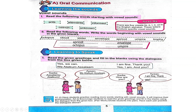Do you know how many vowels there are? There are 5 vowels and they are A, E, I, O, and U in the English alphabet. These letters produce specific vowel sounds.